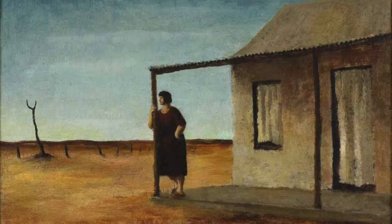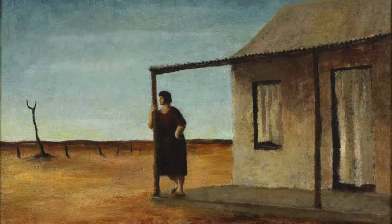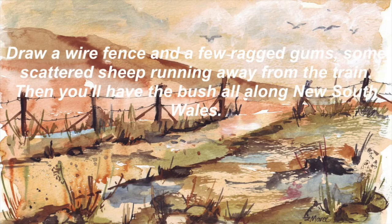Whenever the drover's wife was isolated, it serves as a reminder of the experience when she was alone and how much she wishes her husband was with her when she needed him the most. 'Draw a wire fence and a few ragged guns, some scattered sheep running away from the train, then you'll have the bush all along New South Wales.'